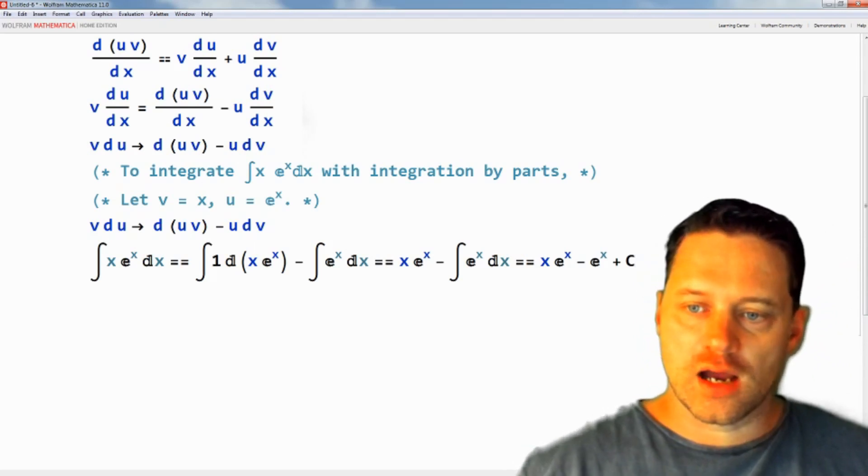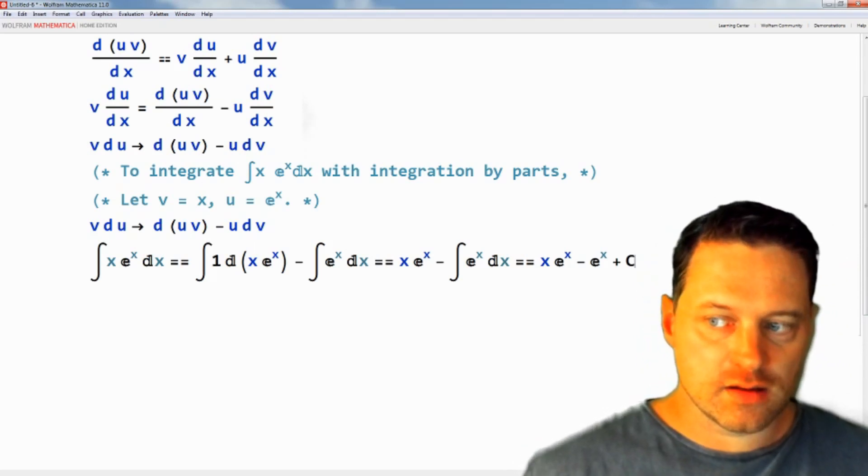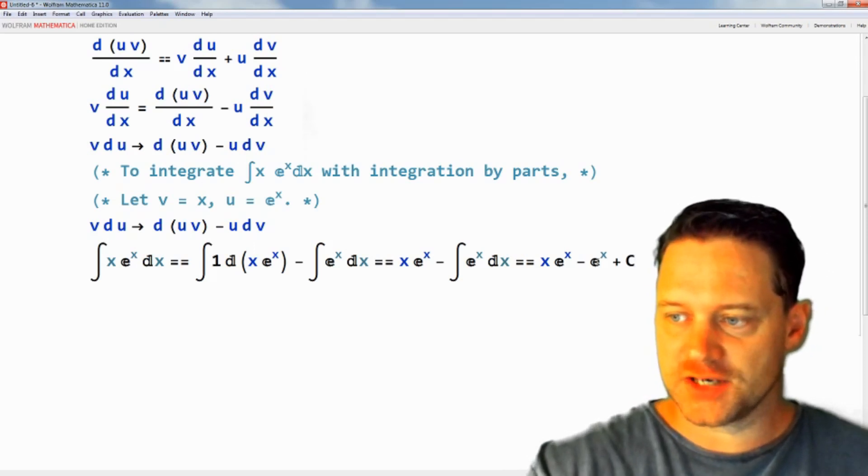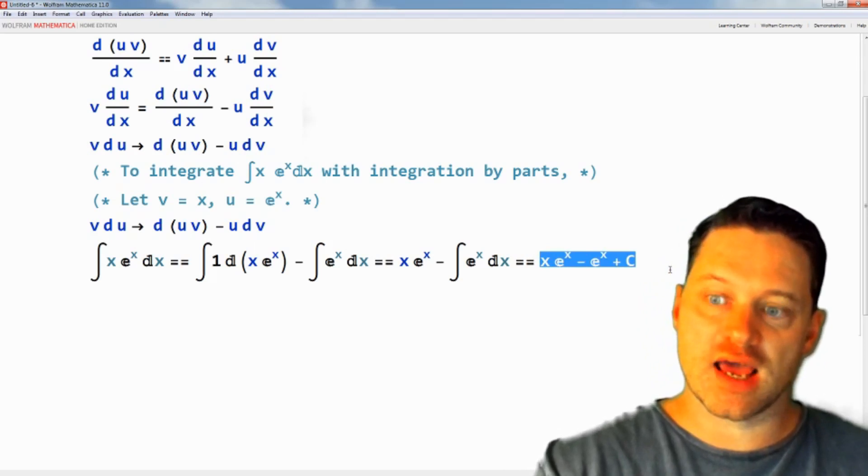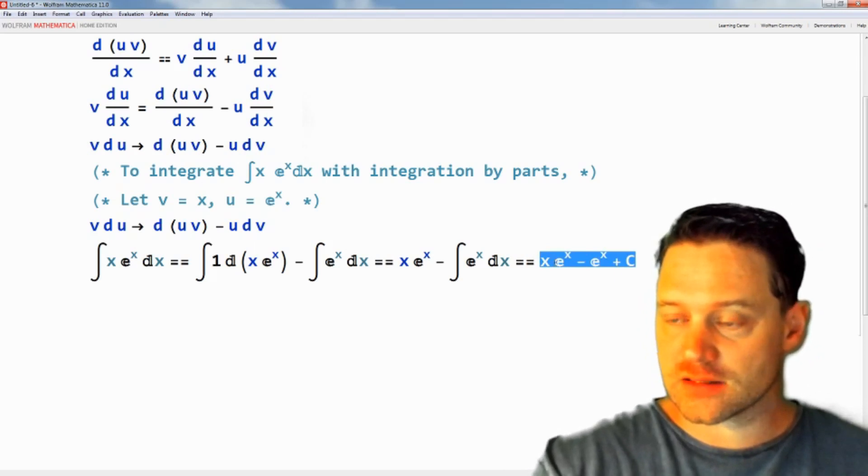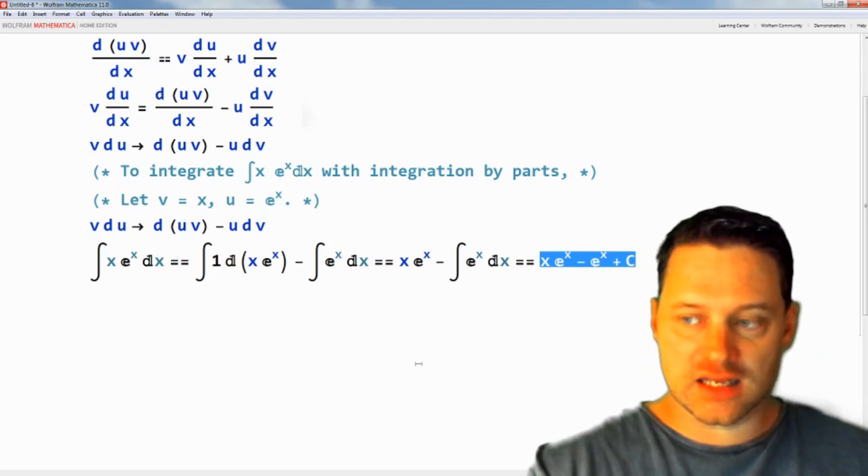If we differentiate this function here on the right hand side with respect to x, what we get is x e to the x.